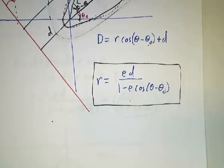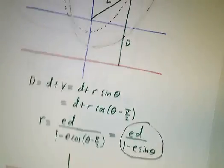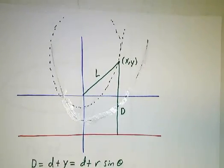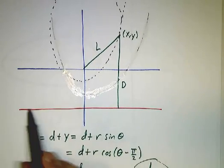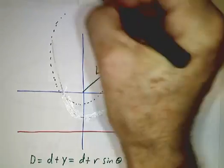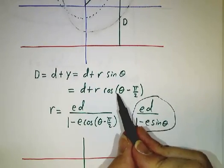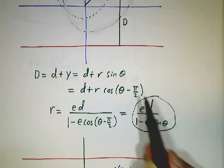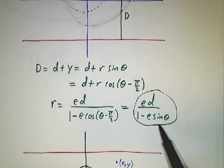Finally, there are some special values of theta naught that come up an awful lot. The first one is theta naught equals 90 degrees. Where we rotate, we took our picture, and we rotate it by 90 degrees, so that the directrix is below the axis, and the conic section is opening up above the axis. In that case, we get cosine of theta minus 90 degrees, or theta minus pi over 2. And cosine of theta minus pi over 2 is the same thing as sine of theta. So we get an equation that involves sine instead of cosine.